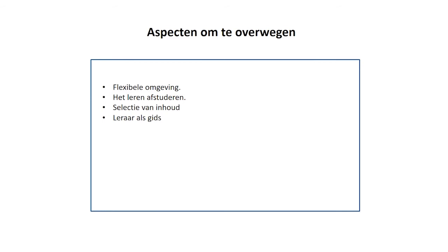Om dit leermodel in het klaslokaal toe te passen, moeten er verschillende aspecten in overweging worden genomen. De leeromgeving moet flexibel zijn en studenten verschillende middelen aanbieden om hun leren te vergemakkelijken. De inhoud moet in moeilijkheidsgraad worden ingedeeld zodat alle studenten er toegang tot hebben. De gepresenteerde inhoud moet het meest relevante zijn voor elk onderwerp. En tenslotte moet de docent de klasomgeving gebruiken om de verworven kennis te versterken en te evalueren.